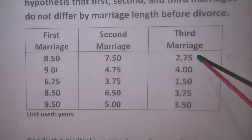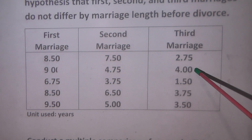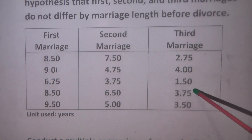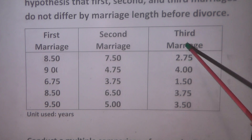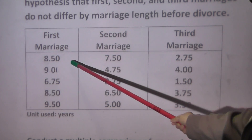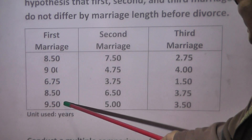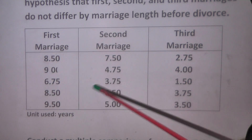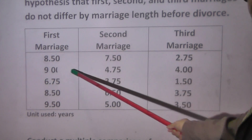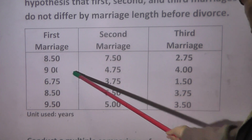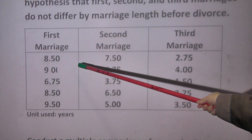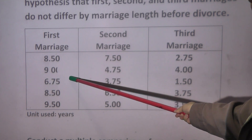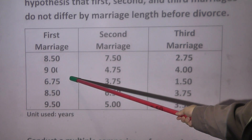Third marriage: 2.75, 4 years, 1.5 years, 3.75 years, and 3.5 years. Without any calculation, we can feel that the mean of the third marriage is shorter than the first marriage. But is the difference significant or not? We need to do a test of significance.